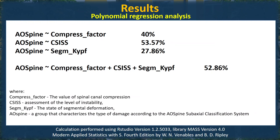To assess the strength of dependence of analyzed parameters on AO Spine type, we used polynomial regression analysis. The morphological type of AO Spine classification can predict the size of spinal canal compression in only 40% of cases, the value of instability in 54%, and segmental deformation in 28% of analyzed patients. The multifactor model gives 53%, meaning that only in half of cases can AO Spine type characterize the main parameters taken into account when determining surgical treatment tactics.